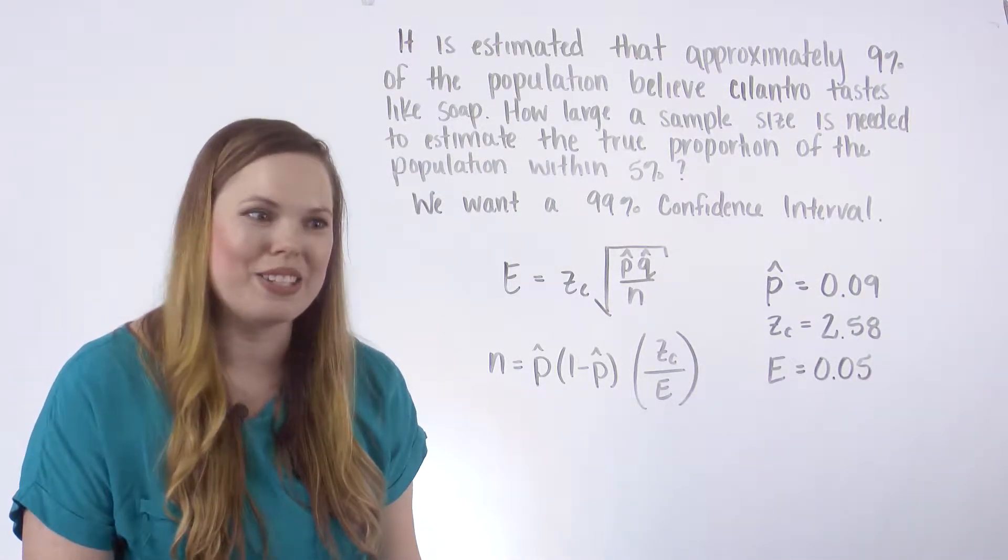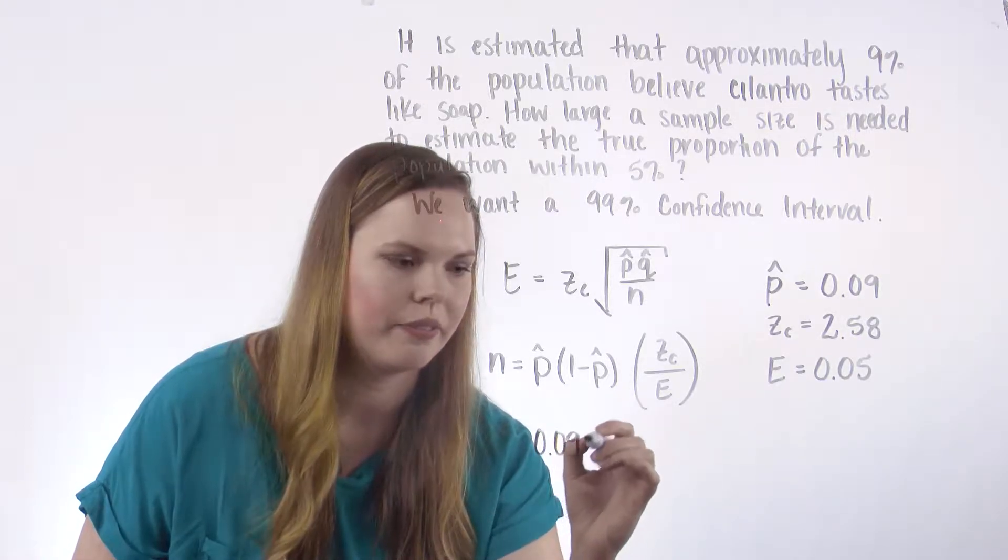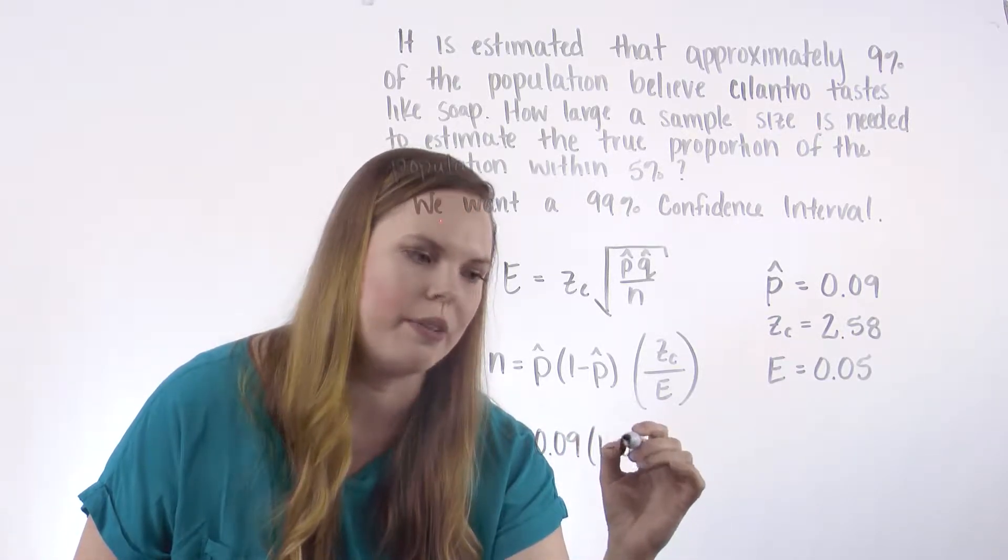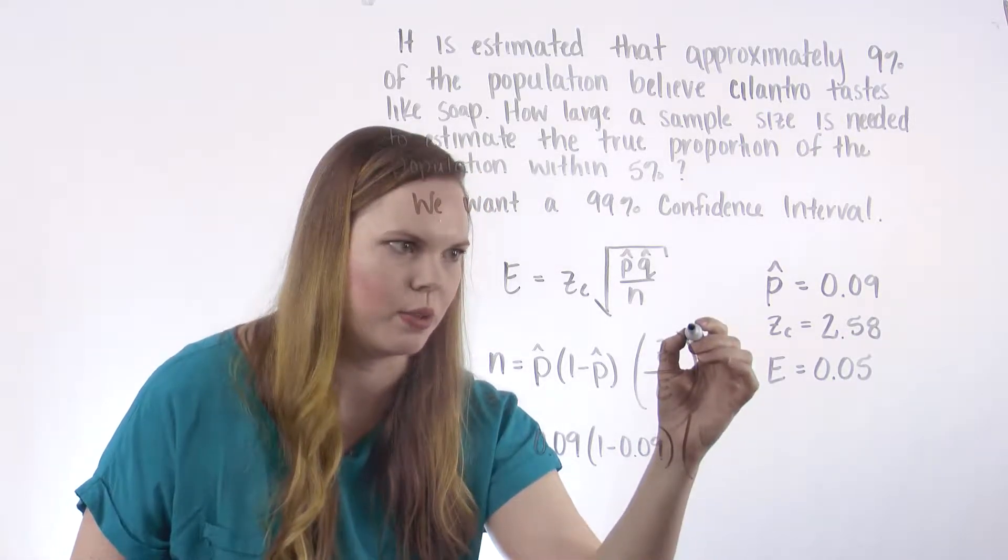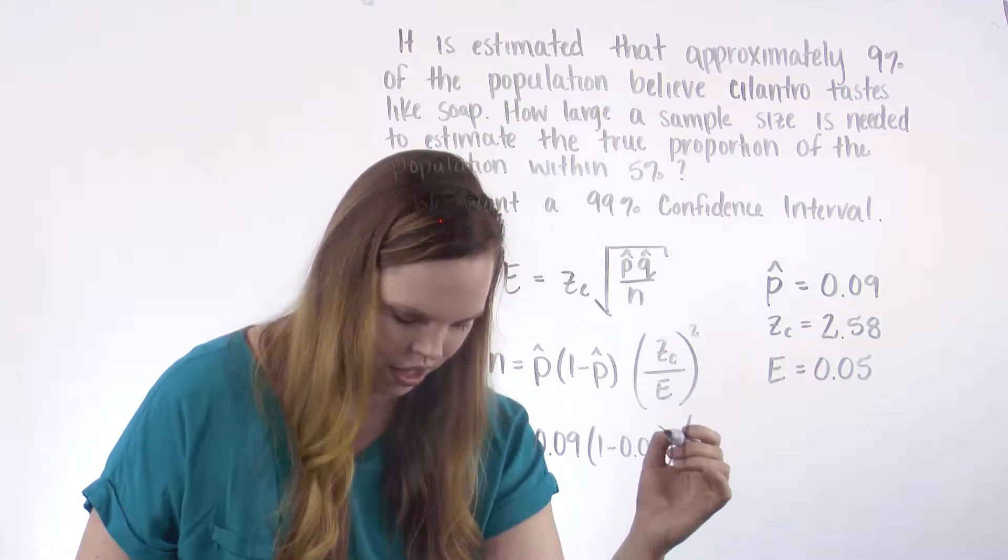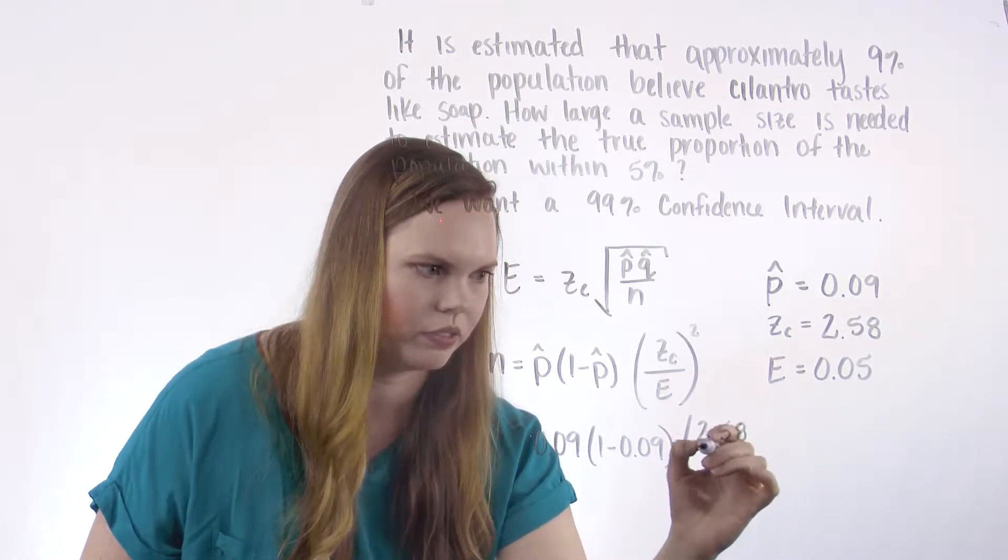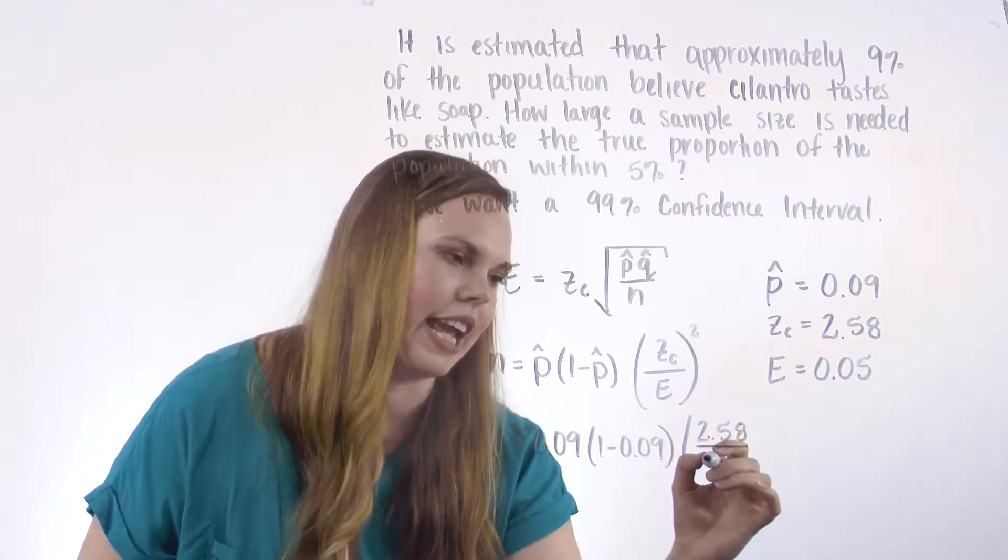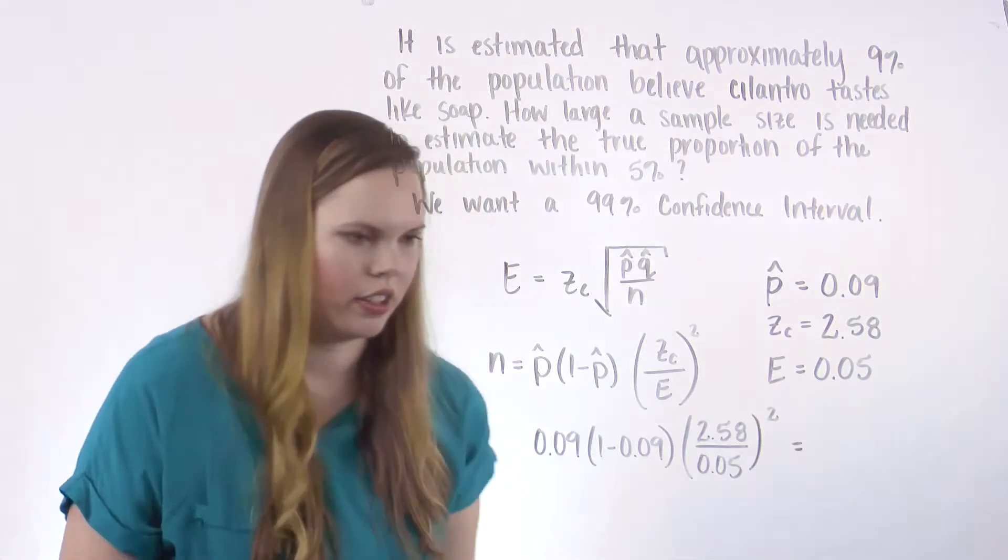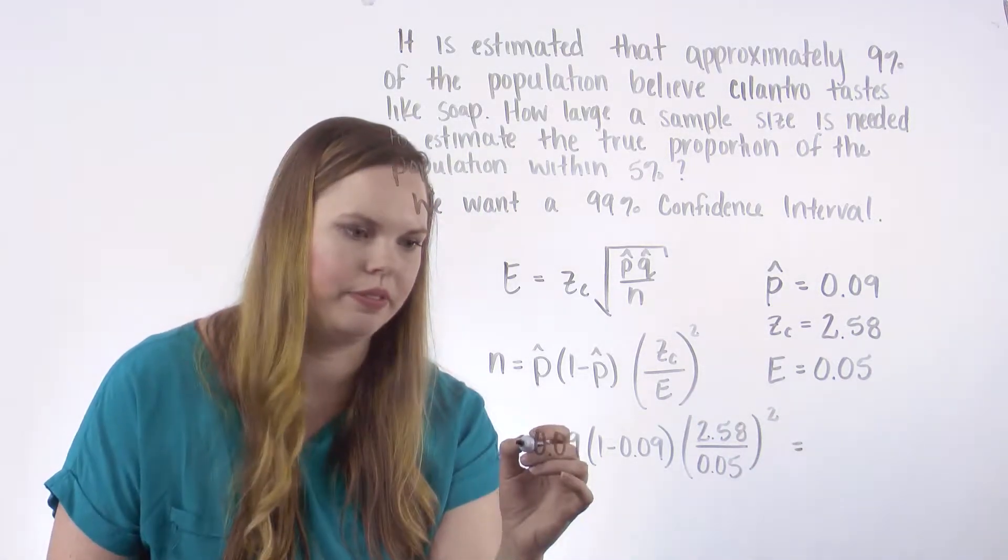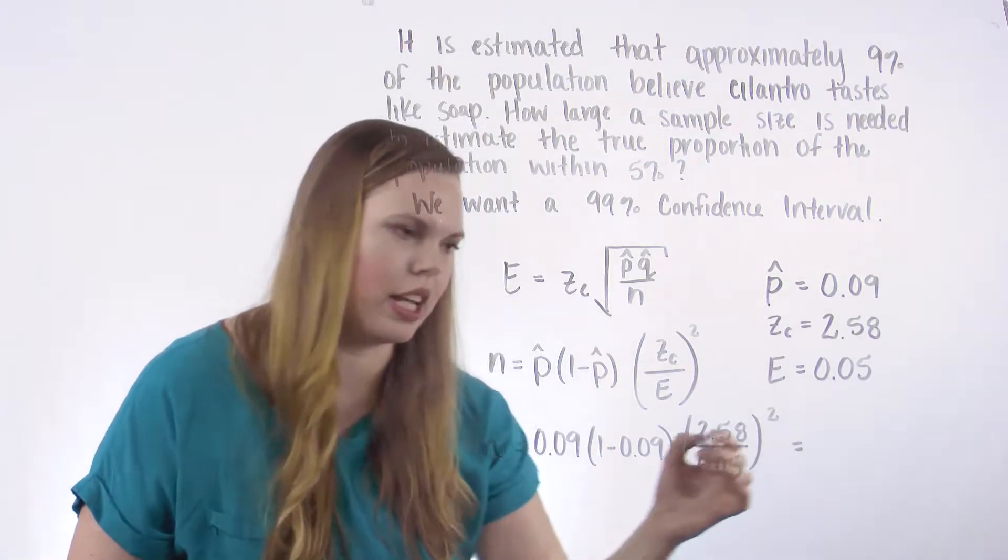And then we just plug into this formula. So our p hat is 0.09, we'll do 1 minus p hat, which is just q hat, and this is squared. Our z sub c is 2.58, and our e is 0.05. If you do that, you get 218.06.